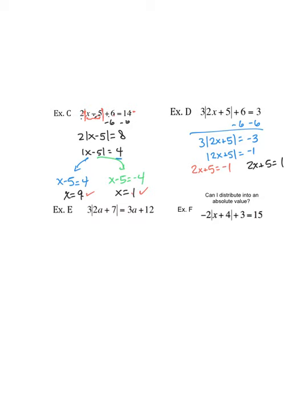Subtract 5. 2x equals negative 6. So x equals negative 3. In this case, we're going to subtract 5. 2x equals negative 4. x equals negative 2.